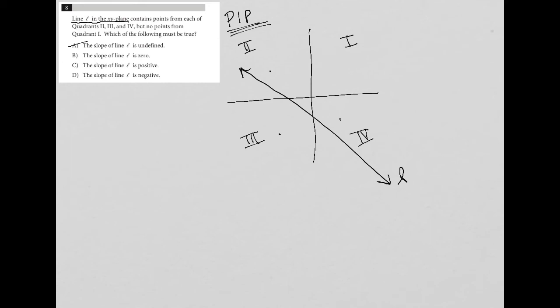This is definitely not horizontal, and there's no way for me to draw a horizontal line that goes through those three quadrants. Choice C, the slope of line L is positive. Well, I don't think so, because again,